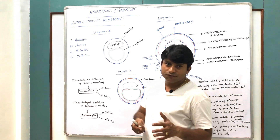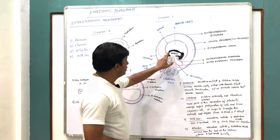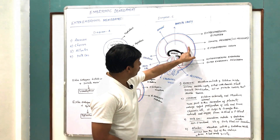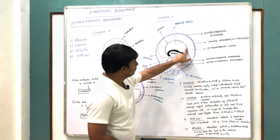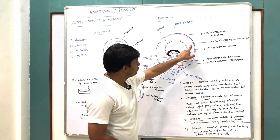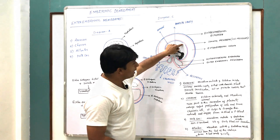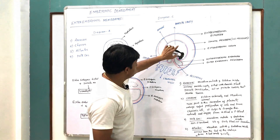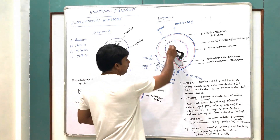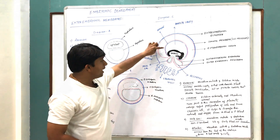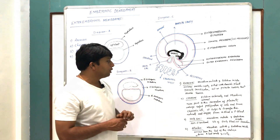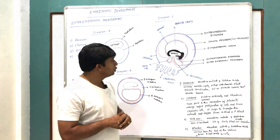The amnion consists of mesoderm to the outside and ectoderm to the inside, and it encloses a cavity called the amniotic cavity. This amniotic cavity is filled with fluid called amniotic fluid, which prevents desiccation of the embryo and acts as a protective cushion that absorbs shocks.